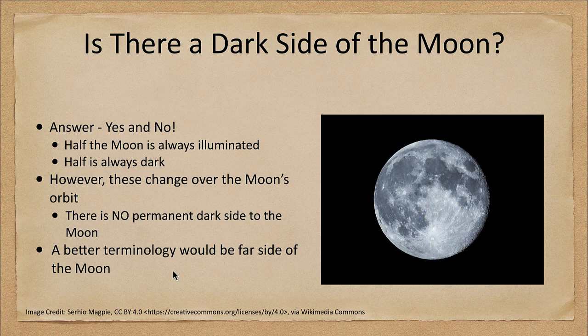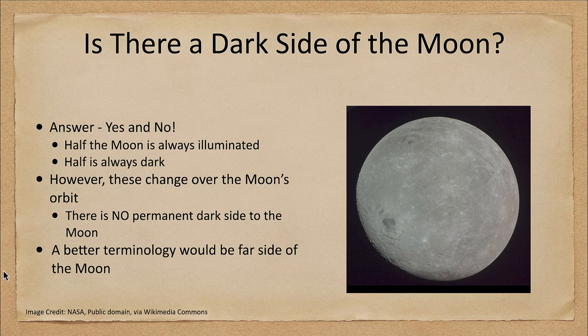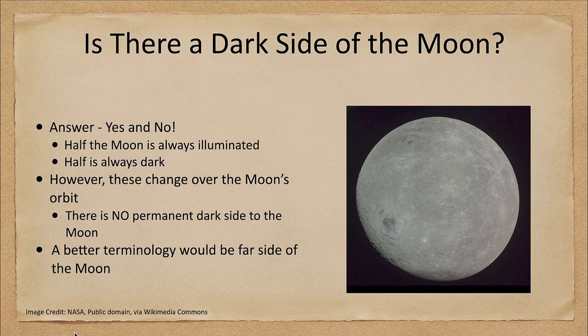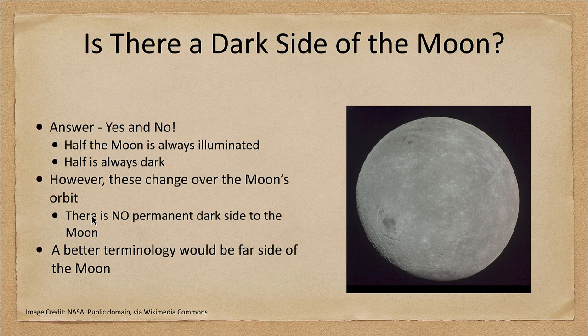The far side of the moon was not visible until the late 1950s when we flew around the moon to be able to see the other side. So there is no dark side to the moon, at least not in a permanent sense, but there is a far side to the moon that can never be seen from Earth.